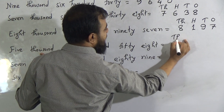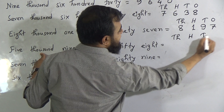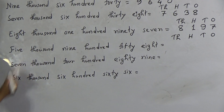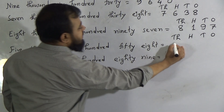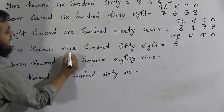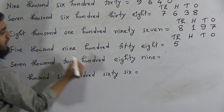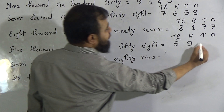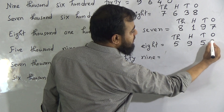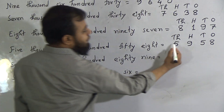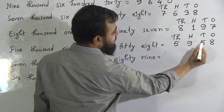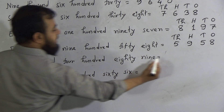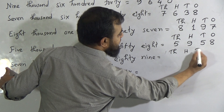The next number is 5958. The biggest place value is thousands, so: Thousands, Hundreds, Tens, Ones. Five thousand means we write 5 in the thousands place. Nine hundred means we write 9 in the hundreds place. For 58, we write 5 in the tens place (for 50) and 8 in the ones place. So 5958 is written as 5 | 9 | 5 | 8.